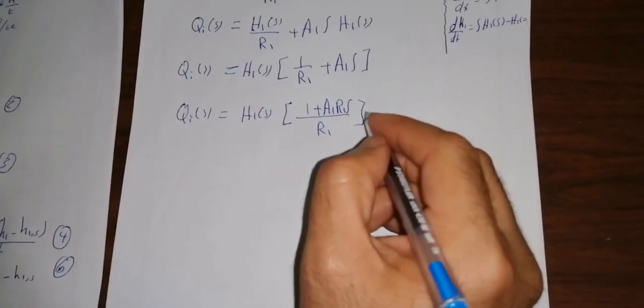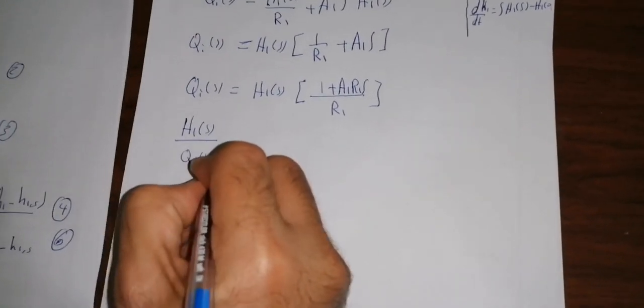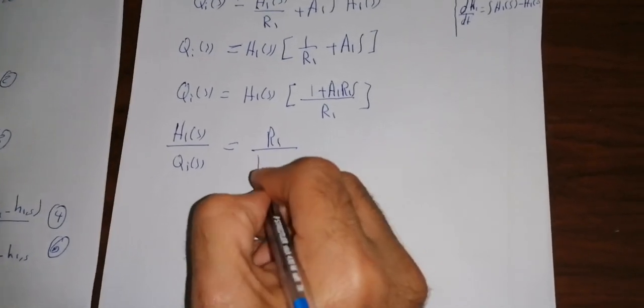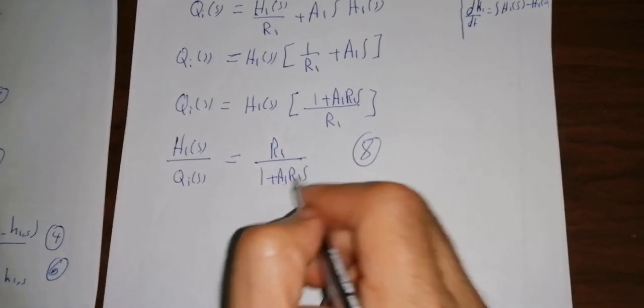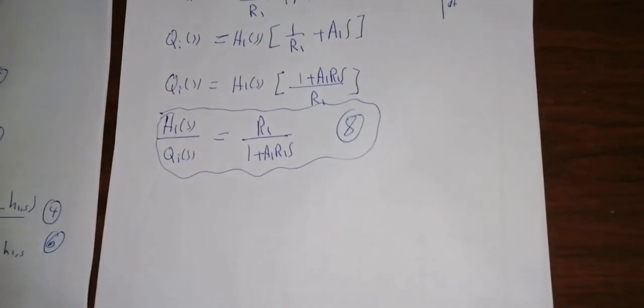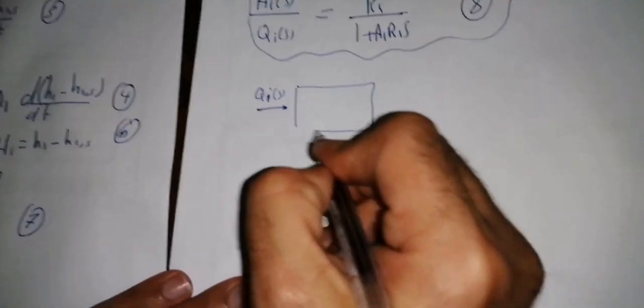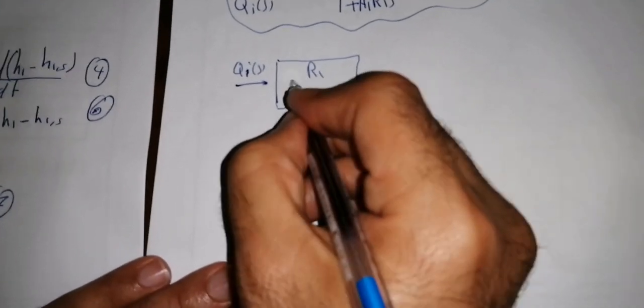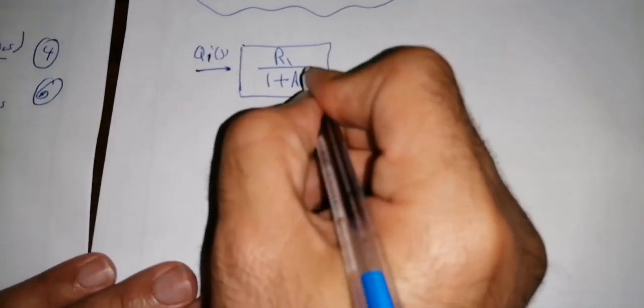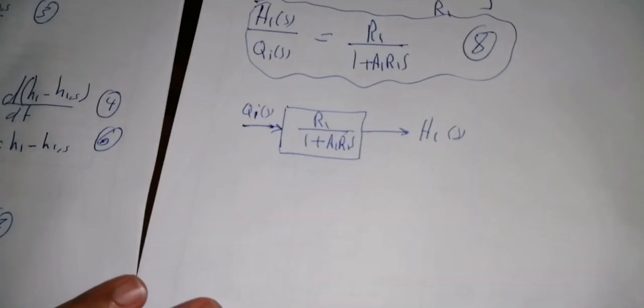Dividing both sides by Q̄I(s), we obtain the transfer function: H̄1(s) / Q̄I(s) = R1 / (1 + A1*R1*s). This is equation 8. This represents the mathematical model of the storage tank, where Q̄I(s) is the input, the transfer function R1/(1 + A1*R1*s) is the system, and H̄1(s) is the output.